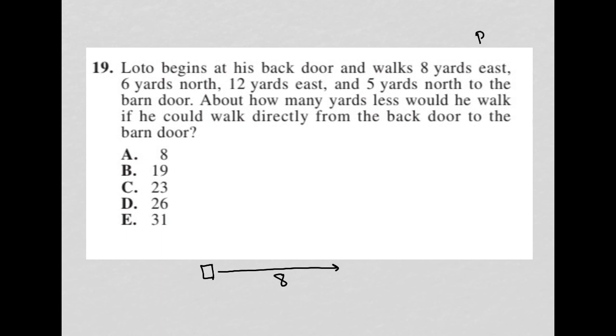This strategy is called plug-in picture, which just means if a question starts to describe anything that can be drawn, we should draw it. So there's our eight yards east and then he goes six yards north. So let's draw that in. That'll be six, and then 12 yards east. So let's draw that in. That's 12, and five yards north. Let's draw that in and that is labeled as five to the barn door. So we have another door there.